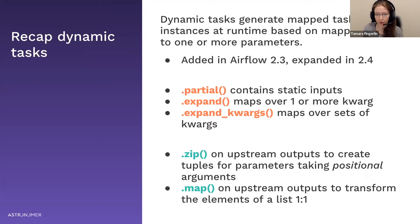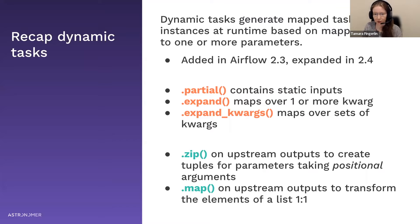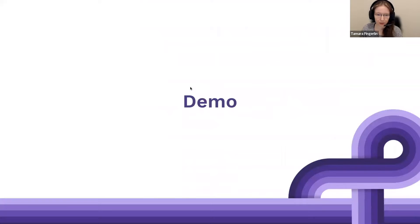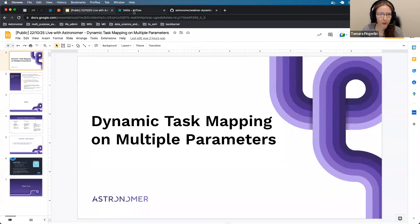There are two more functions important when using dynamic task mapping: .zip and .map, which are helpful functions that you call on upstream outputs. I don't have time to dive deeper into those two today, but there are examples of them in the webinar recording and in the code that will be sent out to you. With that, we can hop over to the demo.